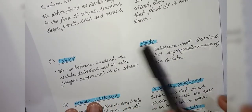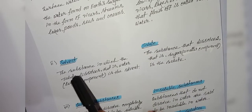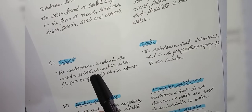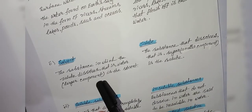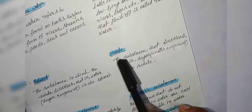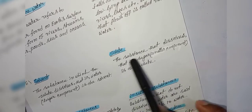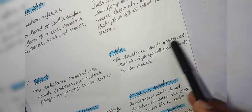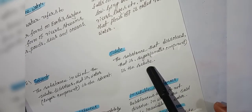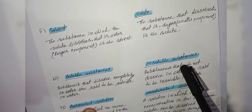Difference between solvent and solute. A substance in which the solute dissolves — the larger component — is called the solvent, such as water. The smaller part that dissolves is called the solute — the substance that dissolves, such as sugar, is the smaller component and is the solute.